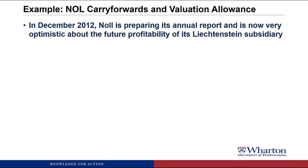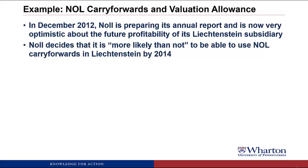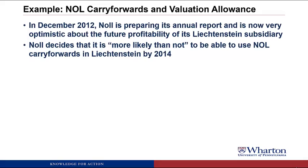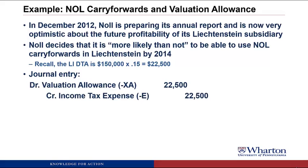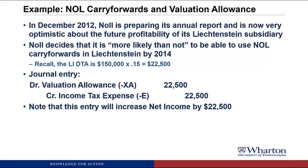Continuing the example: in December 2012, NOL is preparing its annual report and is now very optimistic about the future profitability of its Liechtenstein subsidiary. NOL decides it is now greater than 50% likely it will be able to use the NOL carry forwards in Liechtenstein by 2014. The journal entry to undo the valuation allowance: debit valuation allowance $22,500 and credit income tax expense $22,500. This journal entry will increase net income by $22,500.